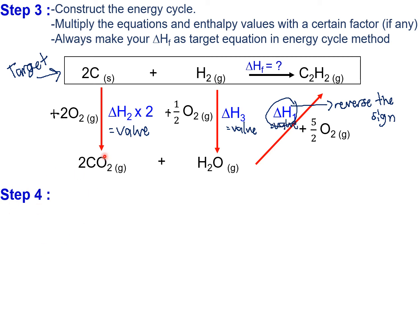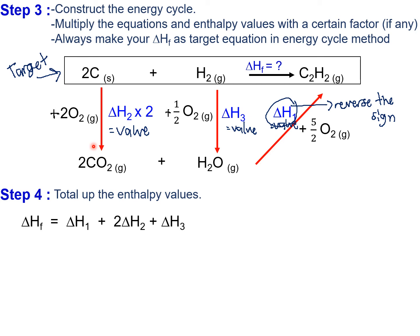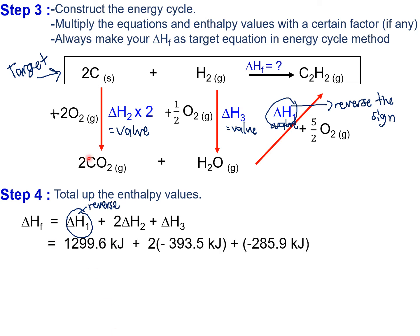Step 4: total up the enthalpy values. Unlike the algebraic method, you don't need to cancel terms — just sum everything up. Remember that for the reversed equation, the enthalpy sign becomes positive. Multiply the second enthalpy by two. The enthalpy of formation of the target equation is positive 226.7 kJ per mol — the same result as the algebraic method.